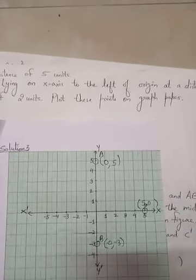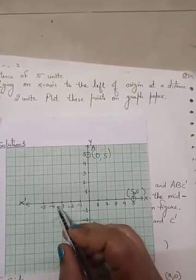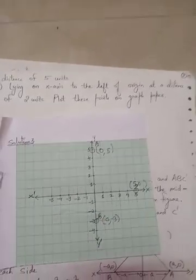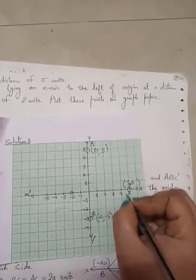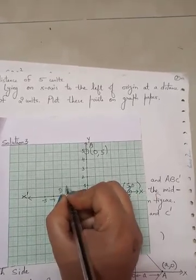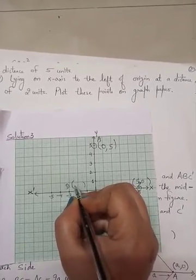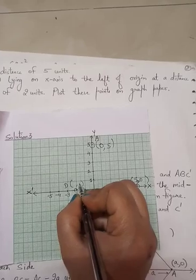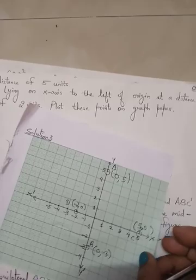Lying on the x-axis to the left of origin — that is the negative side of the x-axis — at a distance of 2 units. This is point D. On the x-axis the y-coordinate is 0, so the coordinates are (-2, 0). Plot these four points on the graph paper.